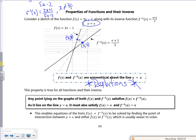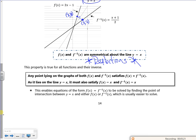If you wanted to solve it, just a little bit at the bottom here: any point lying on the graphs of f(x) and the inverse satisfy each other. But where they meet here, f(x) equals the inverse of x. But if you try to solve...